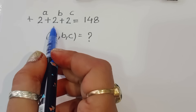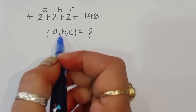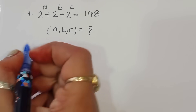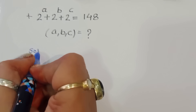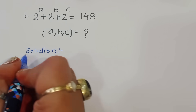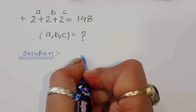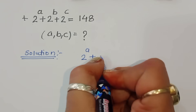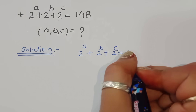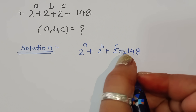The question is: 2 power a plus 2 power b plus 2 power c is equal to 148. We have to find out the value of a, b, and c.